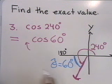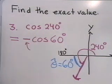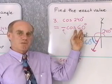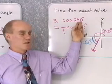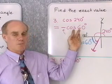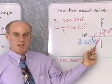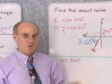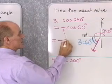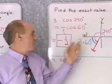In quadrant three, cosine is negative. By the reference angle theorem, the cosine of 240 and the cosine of 60 differ at most in sign, because 60 degrees is the reference angle for 240 degrees. So cosine of 240 equals negative cosine of 60. Since cosine of 60 degrees is one-half, the exact value for the cosine of 240 degrees is negative one-half.